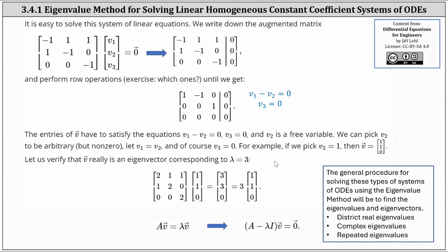Let's verify this by checking that the given 3 by 3 matrix times the eigenvector equals the eigenvalue times the eigenvector. The given matrix times the vector [1, 1, 0] equals the vector [3, 3, 0], which equals 3 times the vector [1, 1, 0]. This confirms that 3 is the eigenvalue and [1, 1, 0] is a corresponding eigenvector.